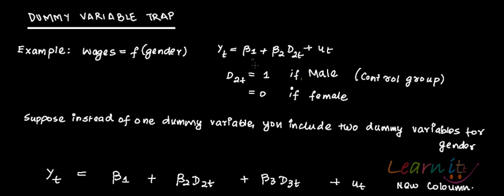So you have yt equals to beta1 plus beta2*d2t plus ut. Say for example, your male variable is a control group. So wherever the person is male, you will put 1 there, and in case the person is female, you will put 0 there. Now you would run this regression.